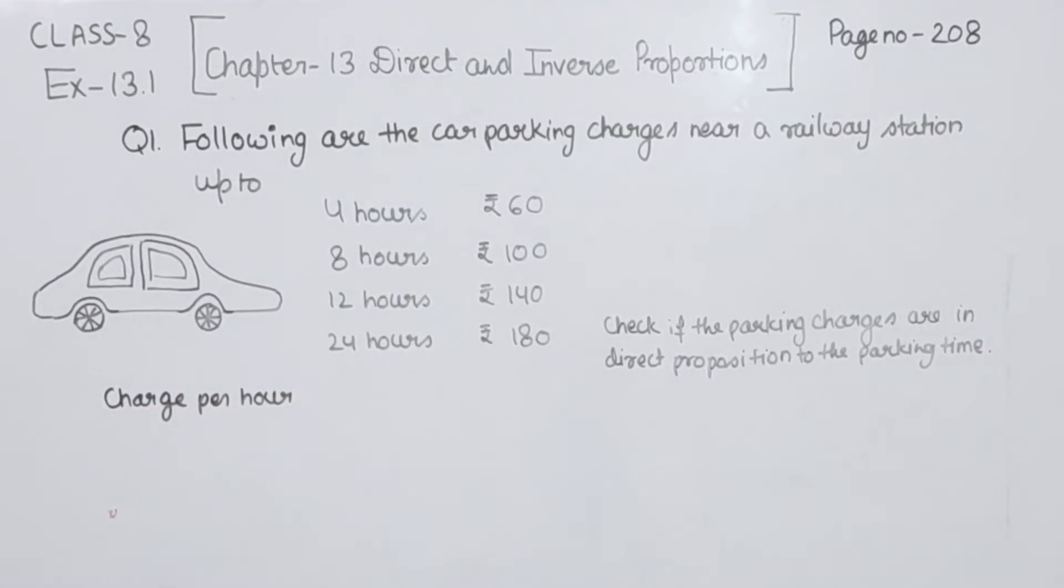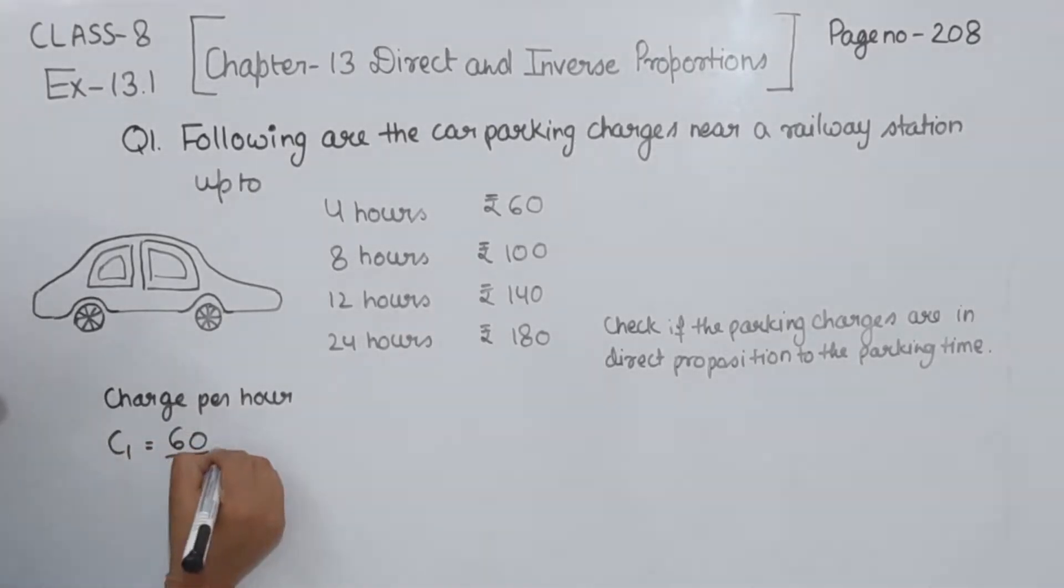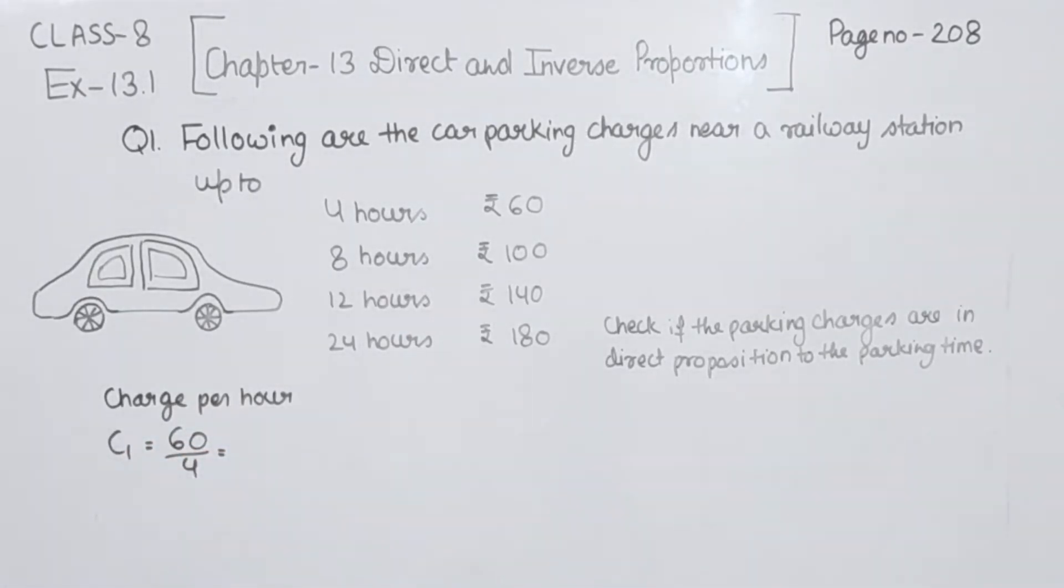So first of all, we are going to take the first combination, that is C1. This one we are having Rs. 60 for 4 hours. So 60 divided by 4, this one we are having as equal to Rs. 15. So this is Rs. 15 per hour.